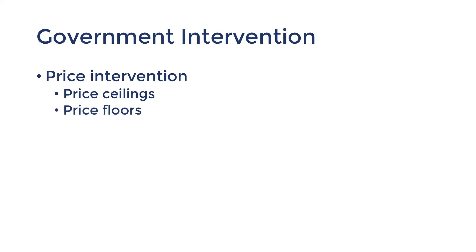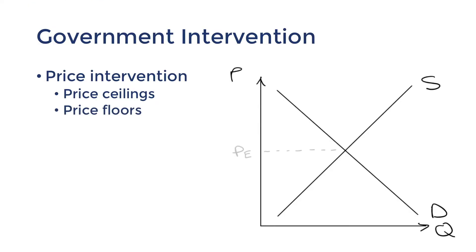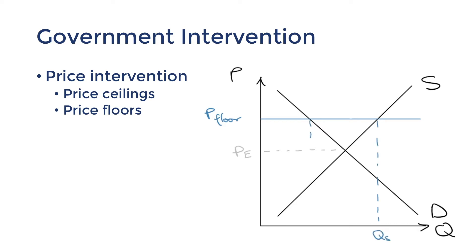Next, let's talk about price floors. This is a lower limit on the price that's placed above the market equilibrium. Just like before, I like to imagine a little man representing price trying to get to the equilibrium, but we've placed a floor there to stop him. Just like price ceilings, price floors create a market disequilibrium — but this time, supply exceeds demand, causing excess supply.